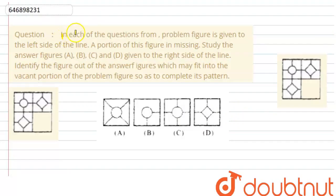Hi guys, now I have a question which says: In each of the questions from problem figure is given to the left side of the line and a portion of this figure is missing.